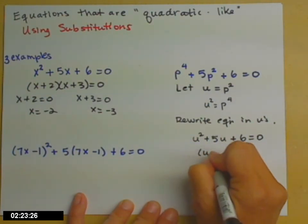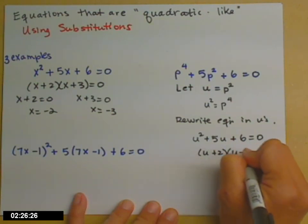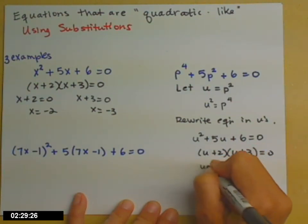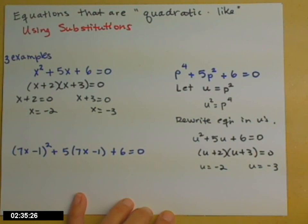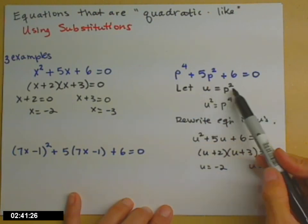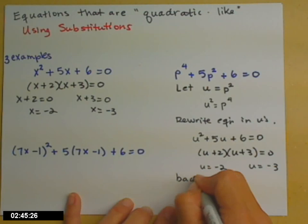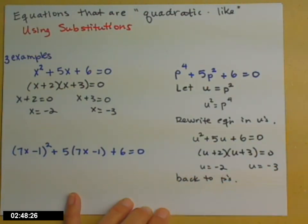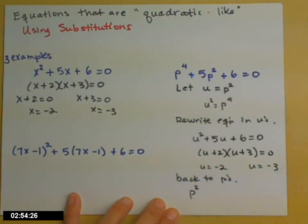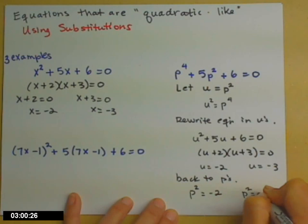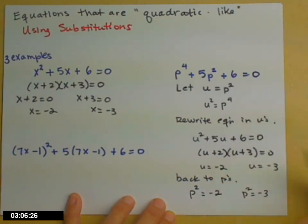Solving just like before: (u + 2)(u + 3) = 0, giving u = -2 or u = -3. We could stop here if anyone asked about u, but nobody asked what u equals — we want to know what p equals. So now we need to back-substitute to get back to p's.